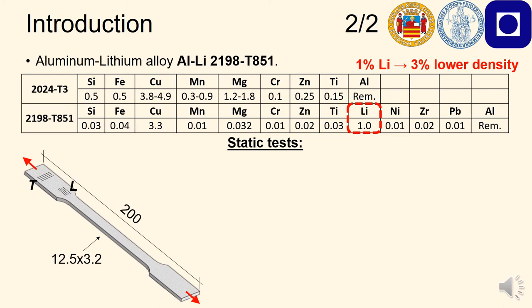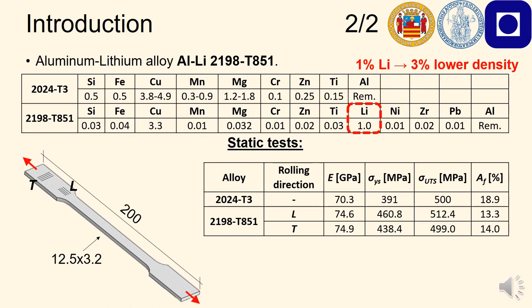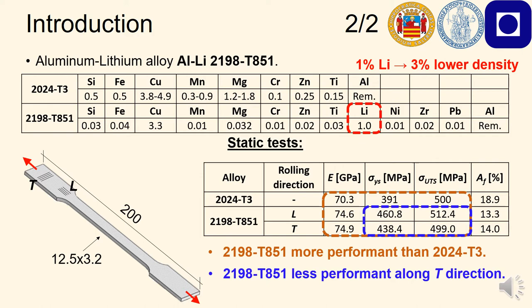We performed uniaxial static tests by considering the geometry shown at the bottom left corner of the slide. We can see the main mechanical properties we measured in the table at right, compared with the 2024-T3. The 2198 delivers higher performances in terms of Young's modulus, yield stress and ultimate tensile stress. Additionally, we can also see that its rolling direction seems to play a role. Lower performances were measured for the T direction, when the rolling direction is perpendicular to the loading axis. We also intend to perform uniaxial static tests on similar specimens for both rolling directions. This is something we are currently performing in our laboratory.